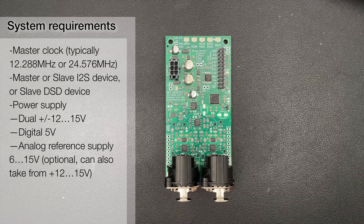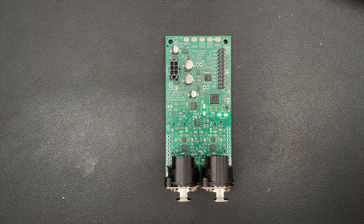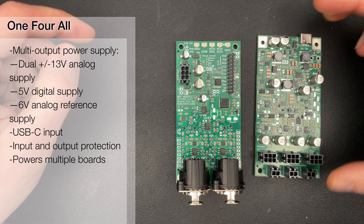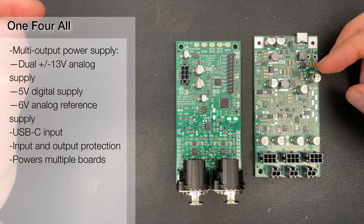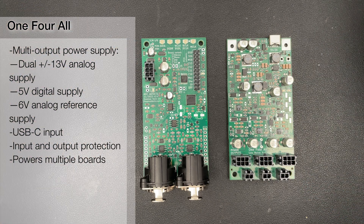To make this board do anything you need at least a master clock and power supply. You need at least supplies for the op amp stages, which is something like plus/minus 12 to plus/minus 15 volts. You also need 5 volts for digital, and there's an optional 6 volts — or a bit higher — to supply analog references separately. For easy power supply connection, if you use one of our power supplies like this one, you can just connect all the supplies with the micro molex 6-pin cable.